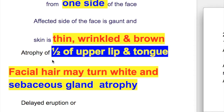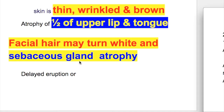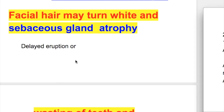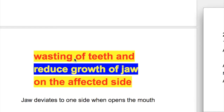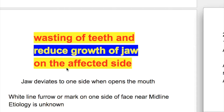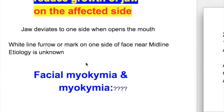There is atrophy of half of the upper lip and tongue. Facial hair may turn white and sebaceous gland atrophy occurs. There is delayed eruption or wasting of teeth and reduced growth of the jaw on the affected side. The jaw deviates to one side when the patient opens the mouth. There is a white line, furrow, or mark on one side of the face near the midline.